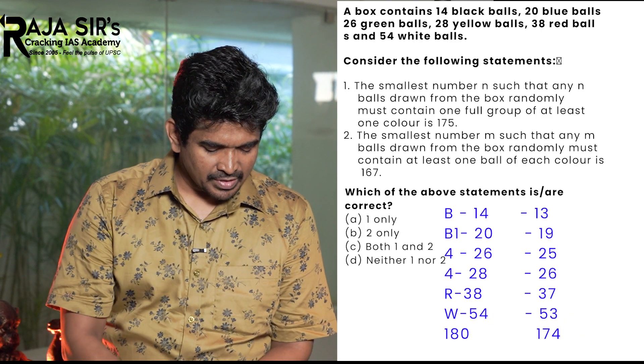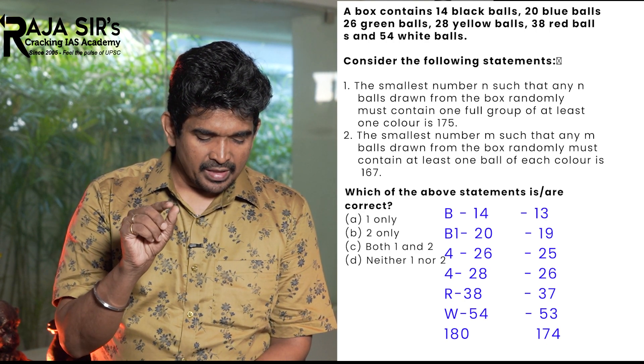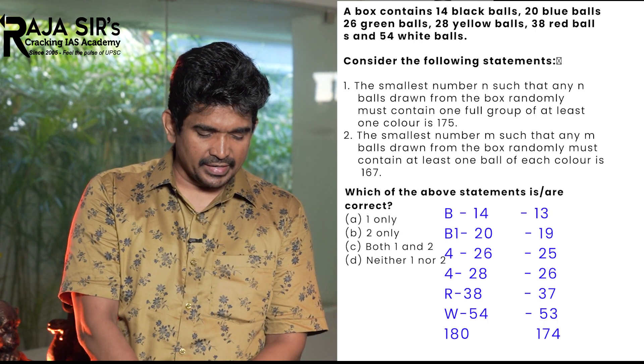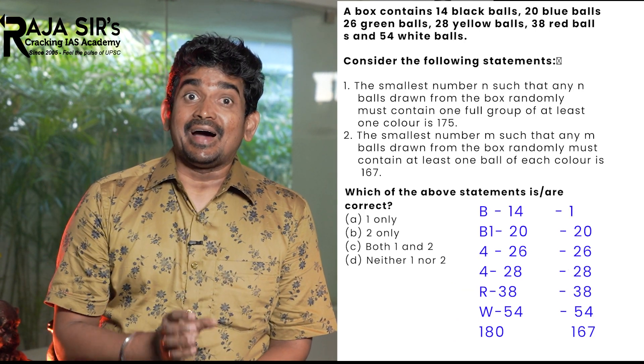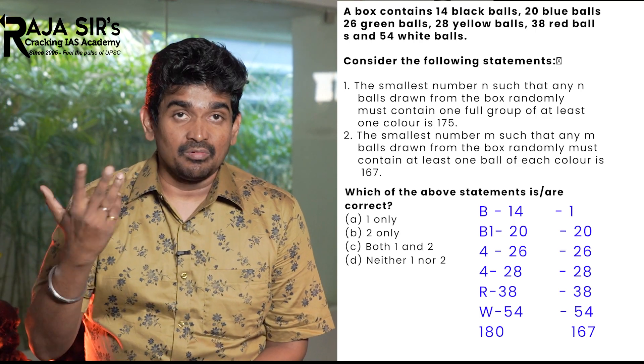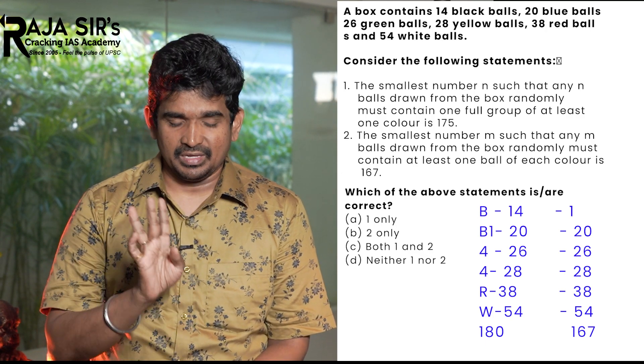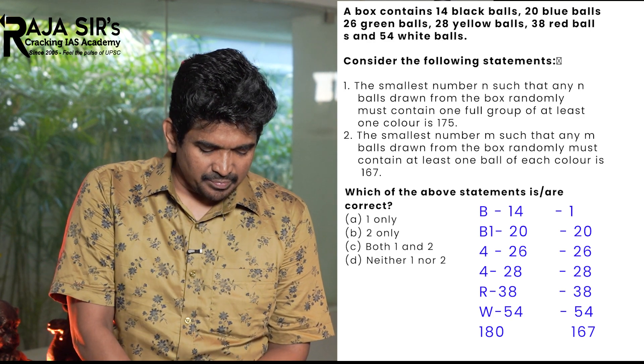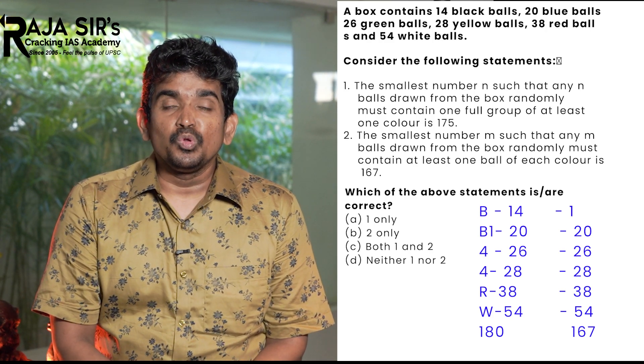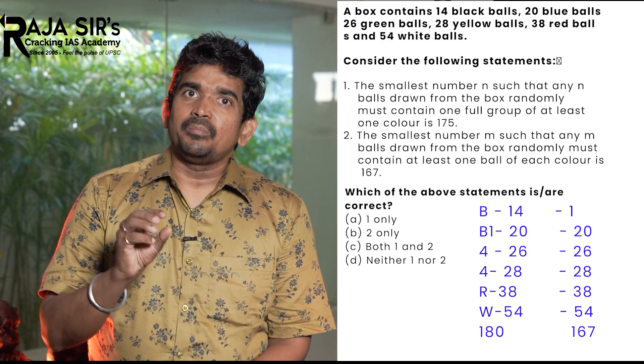At statement 2, we have to find the minimum possible number of balls in such a way that at least one ball of each color is present. At least one ball of each color. If you have maximum number, it will be able to find the maximum number. So the minimum number is black, the minimum number is 14.